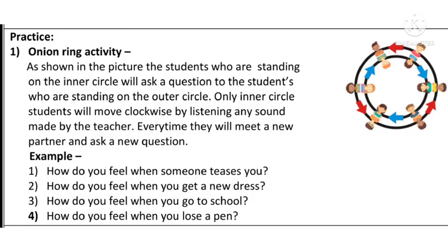The next part of our activity is practice. What is given there? First: Onion Ring Activity. Now why is this activity named 'Onion Ring Activity'? First understand it — look at the picture. You will see that there are two layers. In the same way, if you cut an onion, you can see the different layers in it — tumi kandha kapla tar kandhya made anek ek meka war te thar apanilya distat. As shown in the picture, the students who are standing on the inner circle will ask a question to the students who are standing on the outer circle.